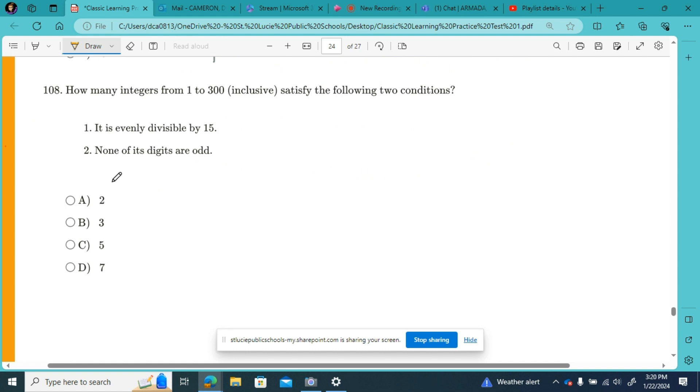Number 108 says, how many integers from 1 to 300 inclusive satisfy the following two conditions? It is evenly divisible by 15, and none of the digits are odd. So you could, instead of multiplying by 15, because every other one is going to end in a 5, you could do your multiples of 30, from 30 to 300.